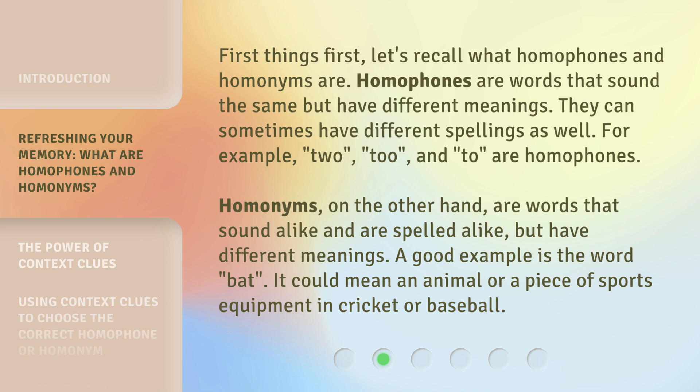Homonyms, on the other hand, are words that sound alike and are spelled alike but have different meanings. A good example is the word 'bat.' It could mean an animal or a piece of sports equipment in cricket or baseball.